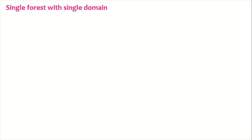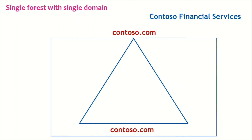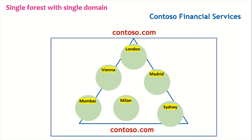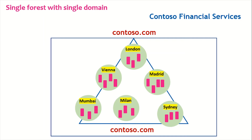Let's look at single forest with single domain with an example. We have an organization named Contoso Financial Services. It has a single forest with a single domain named contoso.com and has some Active Directory sites — in the real world these are called offices. Every site has its own domain controllers, servers, and workstations. This is the single forest with single domain model.